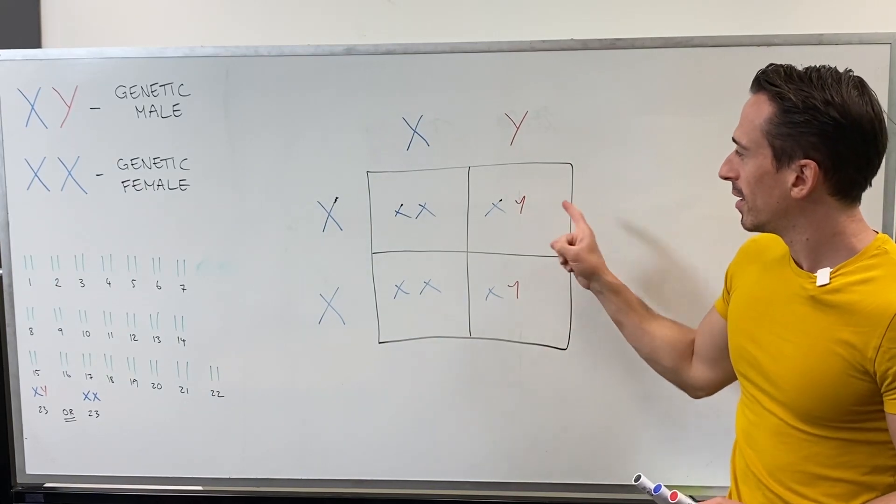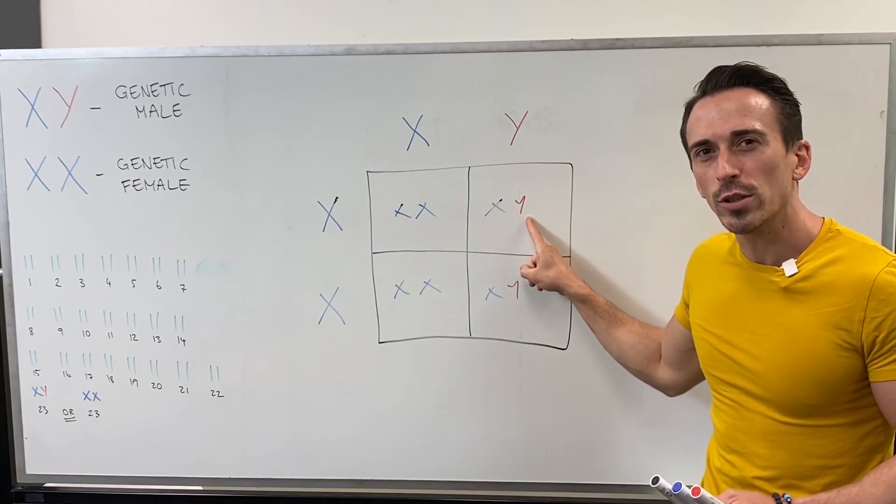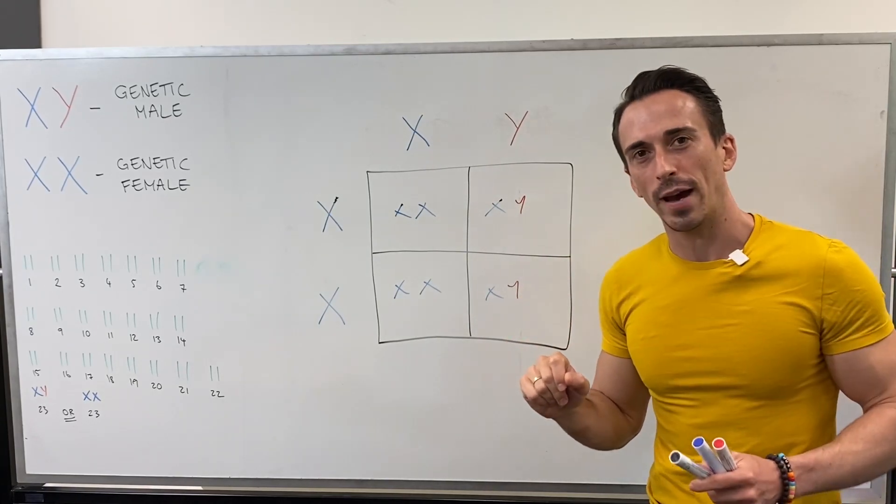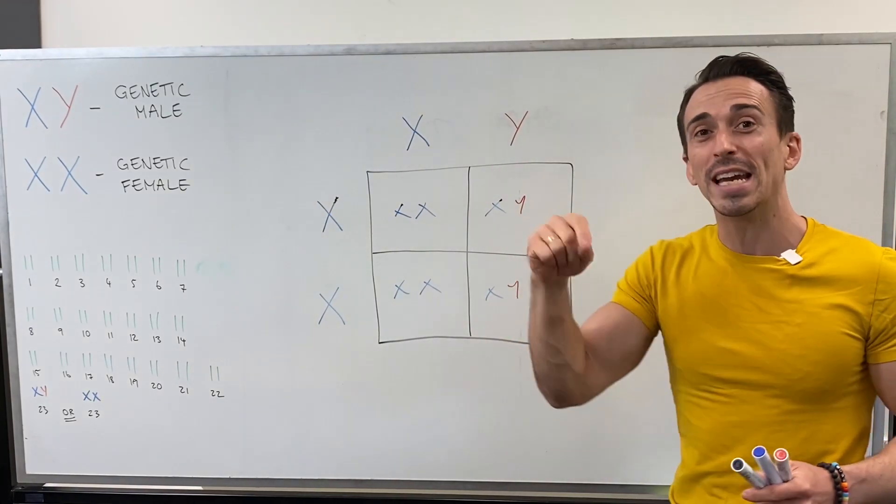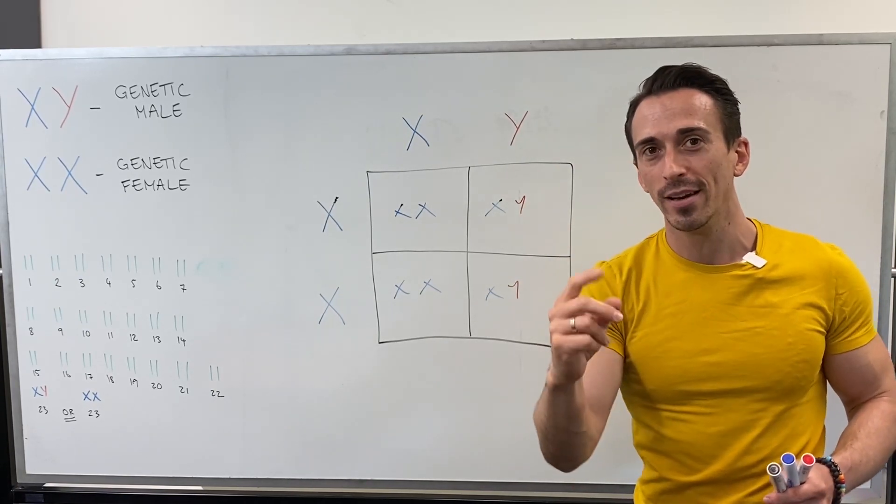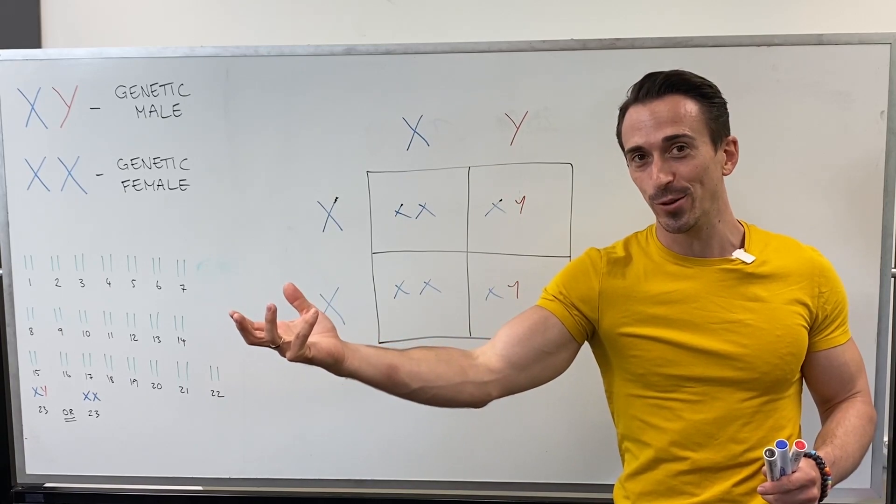But look, there's no other X chromosome for males. It's just XY. So in actual fact, when it comes to males inheriting an X-linked disease, they only need one copy to manifest the disease or disorder.